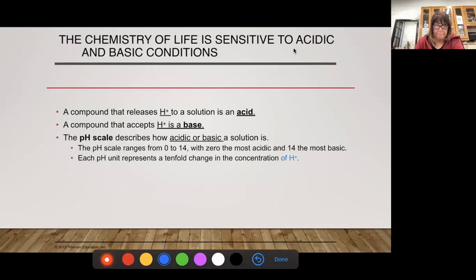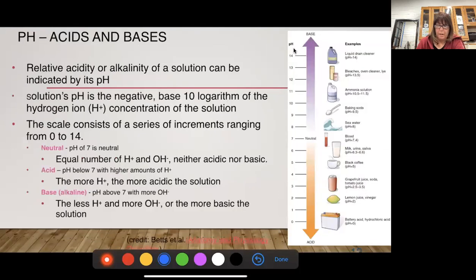The pH scale is on a scale from 0 to 14, with, I have a picture here, with 7 being neutral. As we go bigger, up higher in our numbers, that's a base. As we go lower, it's an acid. Another word for base is alkaline. So when you hear about things being alkaline, they're referring to being basic.